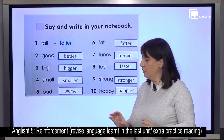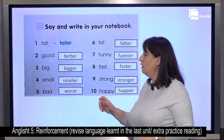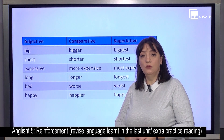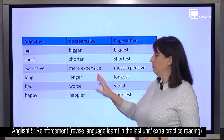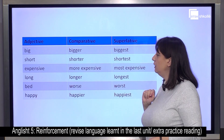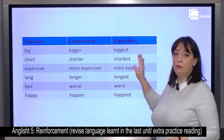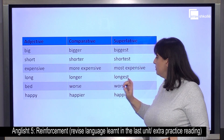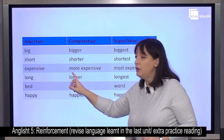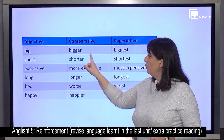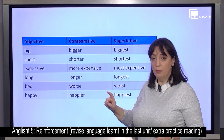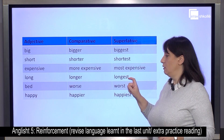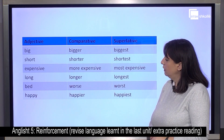Do you remember the comparative form? For example, the monkey is smaller than the lion. In the last lesson we learned about the superlative form. Big — bigger — the biggest. Short — shorter — the shortest. Expensive — more expensive — most expensive. Do you remember? Expensive is a long adjective, so we don't say -er but we use 'more.' And we don't use -est, but we use 'most.' Long — longer — the longest.